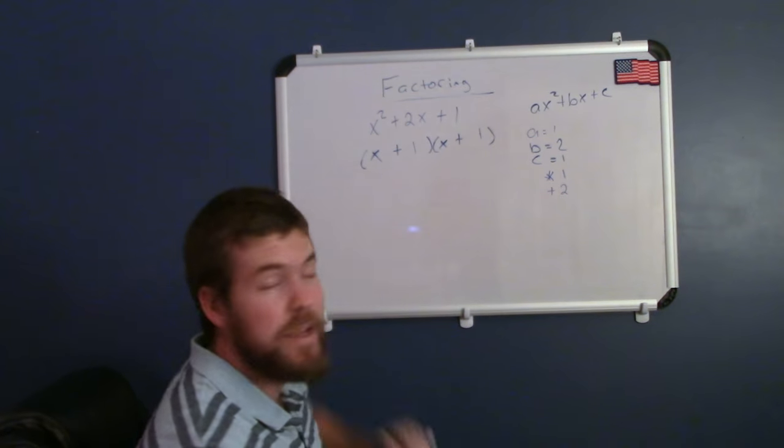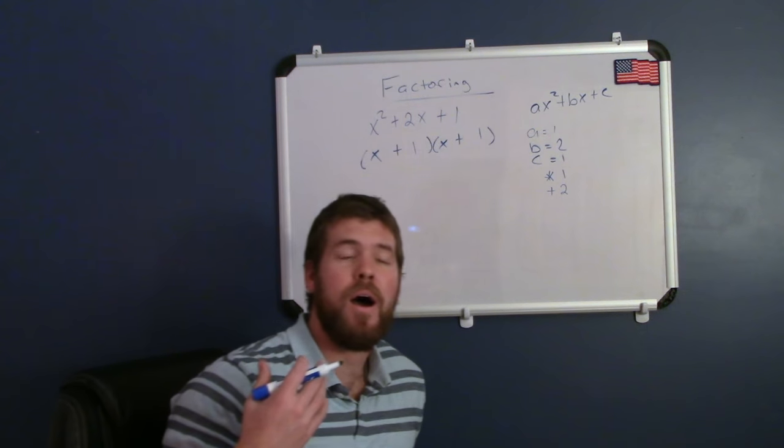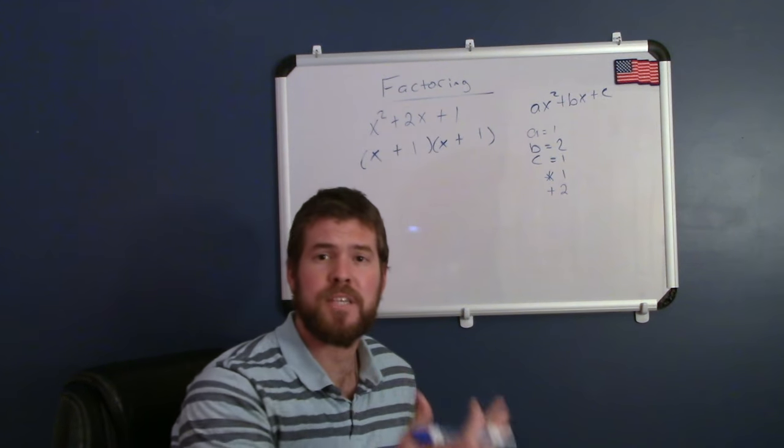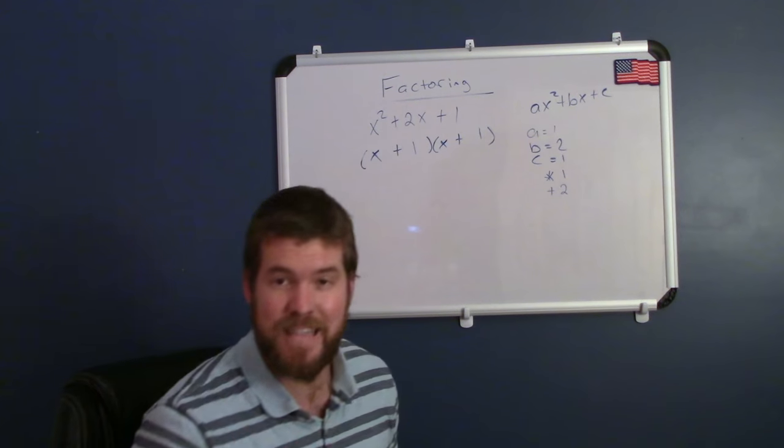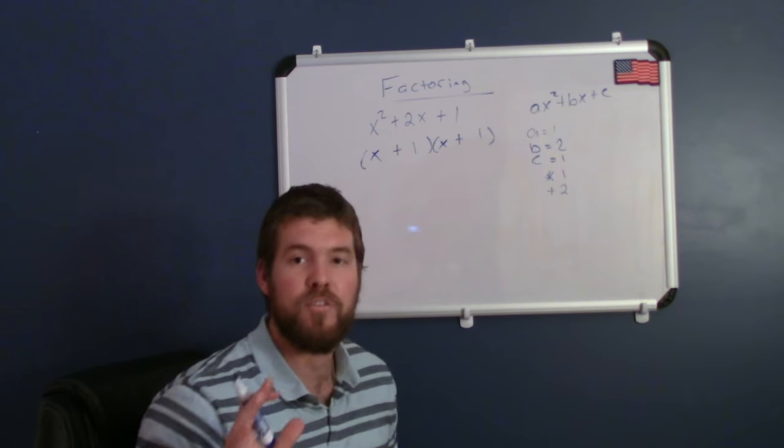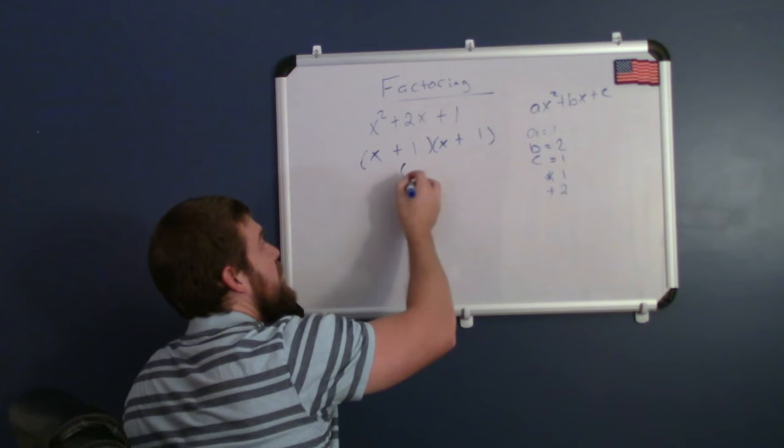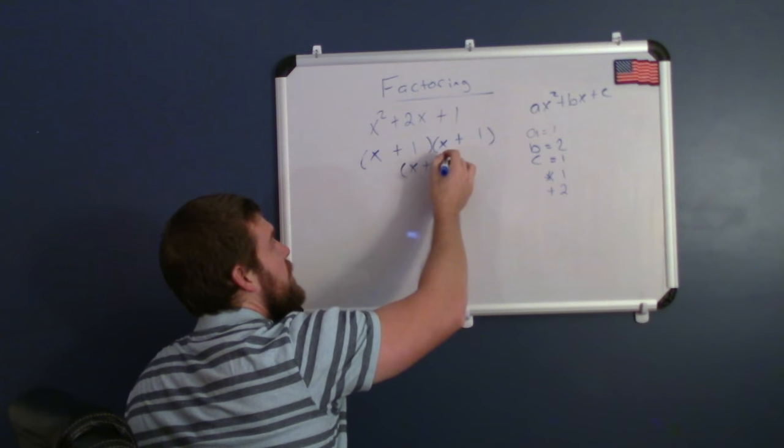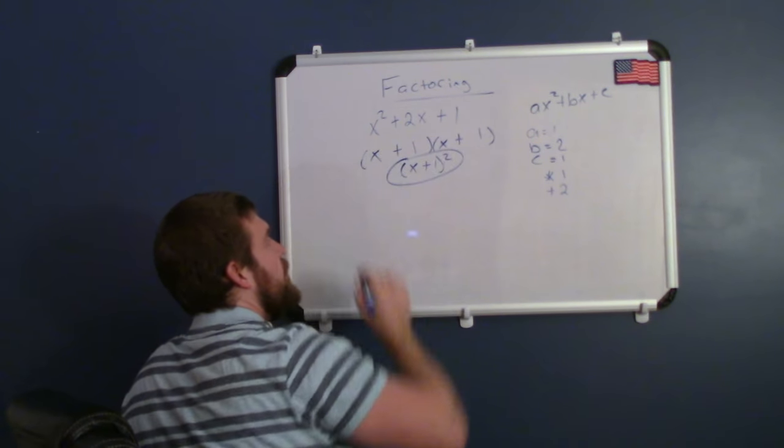Now we have the same thing written twice, and we know that the same number or expression multiplied by itself is the same thing as writing that expression or number squared. So I can rewrite this as being x plus 1 squared, and that would be my final answer.